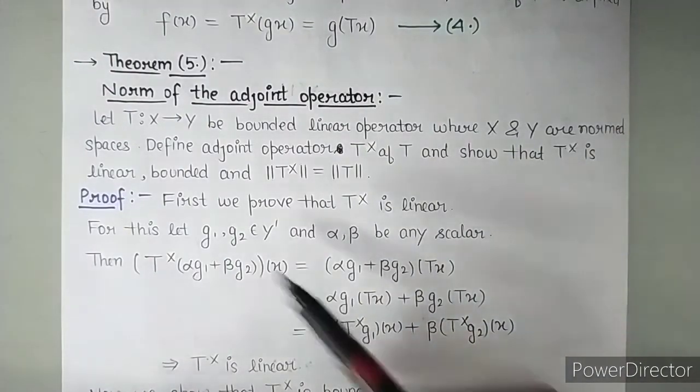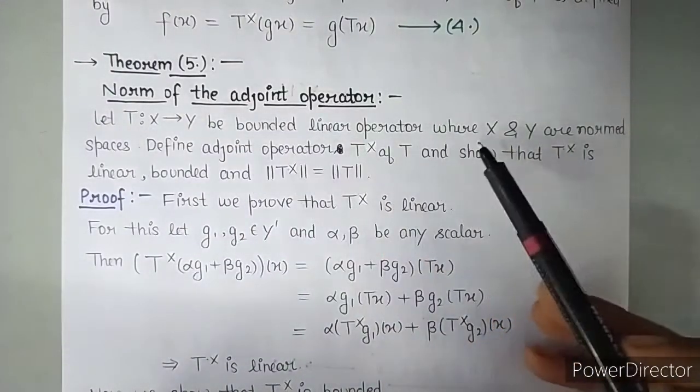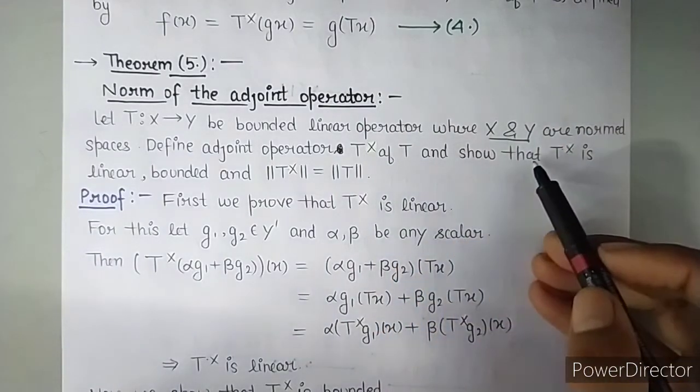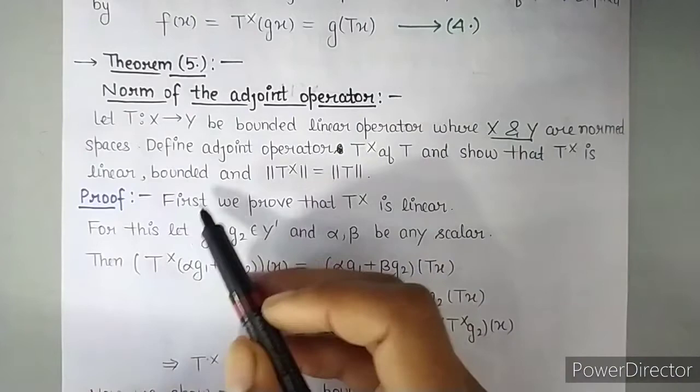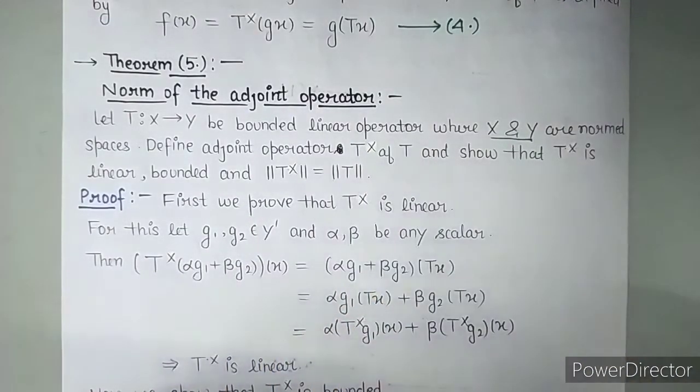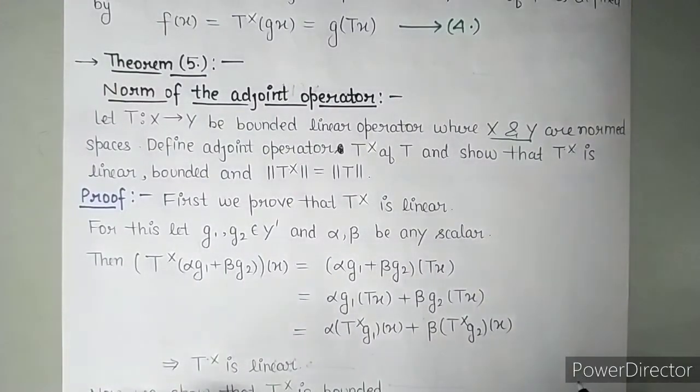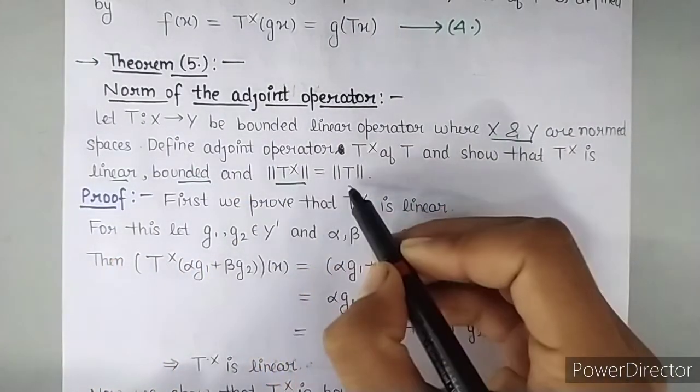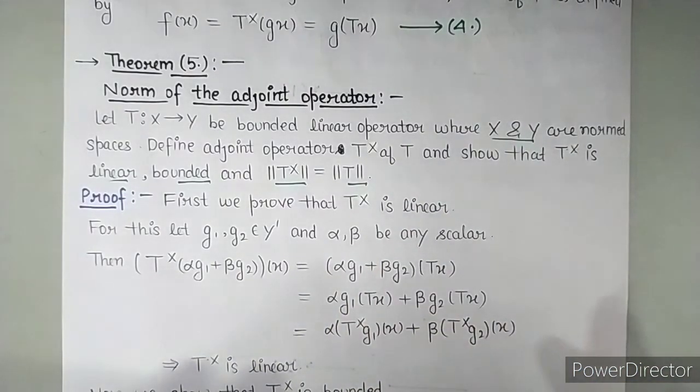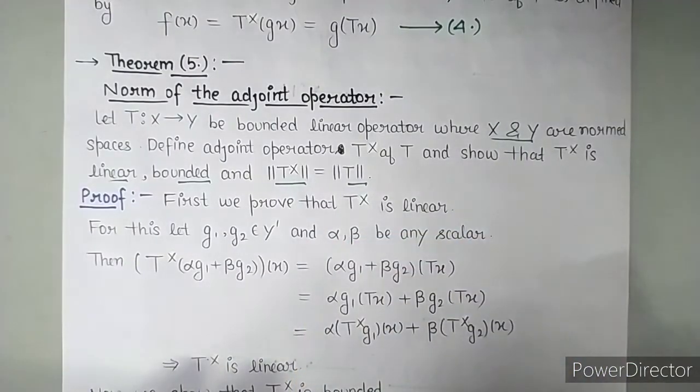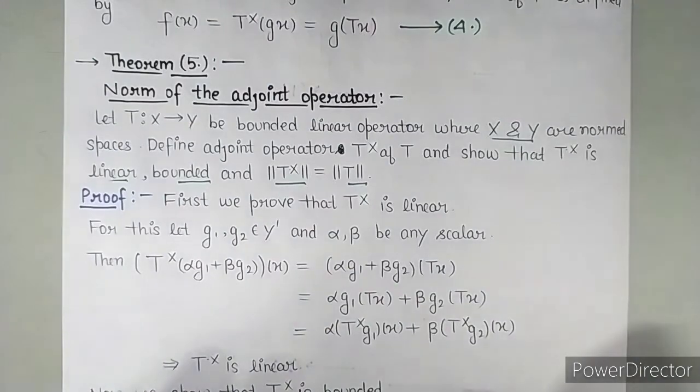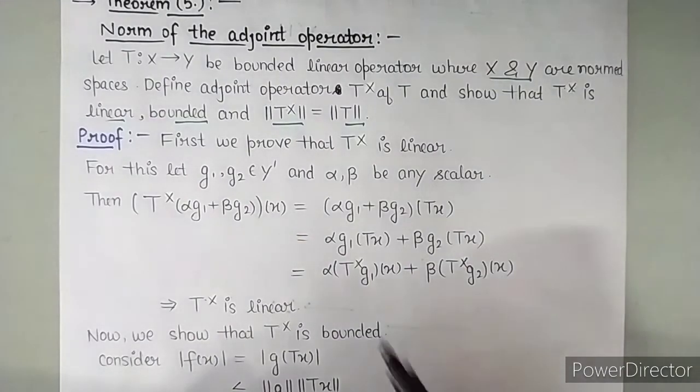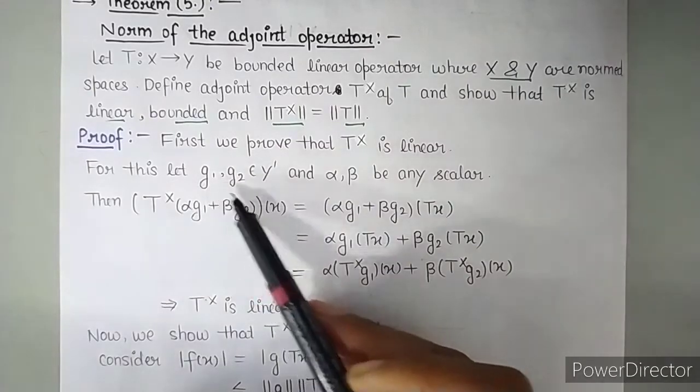Now we will do a basic theorem on this. So norm of the adjoint operator. The statement is let T from X to Y be a bounded linear operator where X and Y are normed spaces. Define an adjoint operator T star of T and show that T star is linear, bounded, and norm of T star equals norm of T. So we have to prove that the adjoint operator is linear, the adjoint operator is bounded, and the norm of the adjoint operator is the same as the norm of the bounded linear operator whose adjoint we defined. So first we prove that T star is linear. For this let G1 and G2 belong to dual space of Y where alpha and beta are scalars.